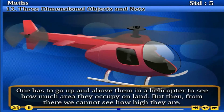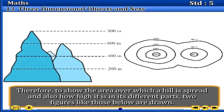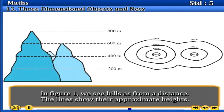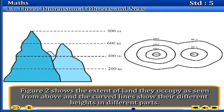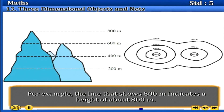One has to go up above the hills in a helicopter to see how much area they occupy on land. But then, from there, we cannot see how high they are. Therefore, to show the area over which a hill is spread and also how high it is in its different parts, two figures are drawn. In figure one, we see hills as from a distance, and the line shows their approximate height. Figure two shows the extent of land they occupy as seen from above, and the curved lines show their different heights in different parts. For example, the line that shows 800 meters indicates a height of about 800 meters.